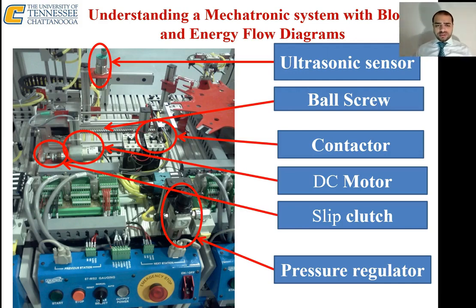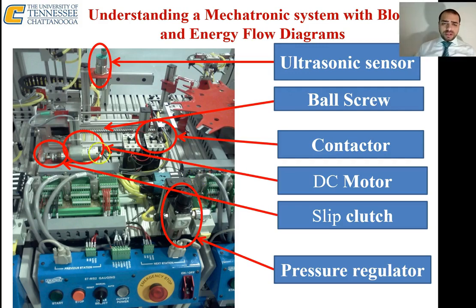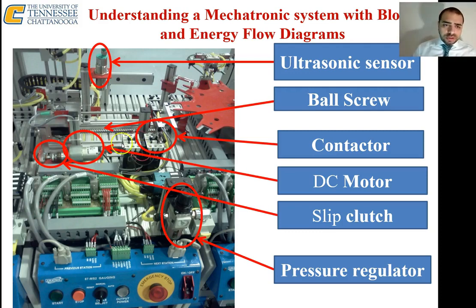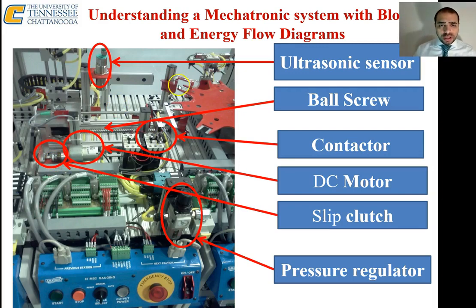For example, looking at this gauging station — one of the mechatronics trainers — you can see a pressure regulator, solenoid valves, and contactors. These two contactors are mechanically interlocked, which means they are most likely used for forward/reverse control. There is a DC motor, a slip clutch to protect the motor from overloads, and a ball screw. These are the modules on the station — you need to understand them and how they connect.